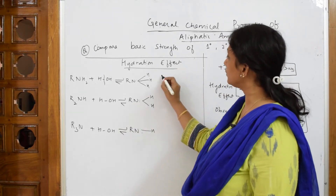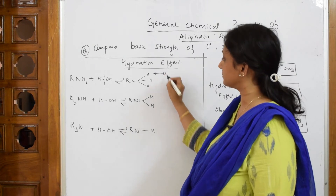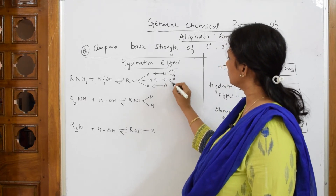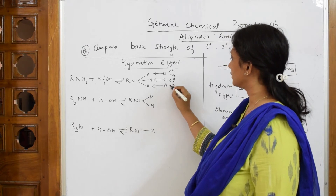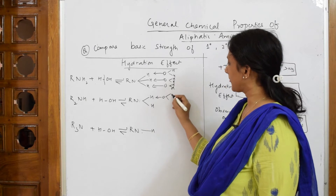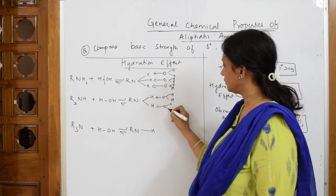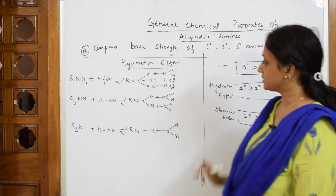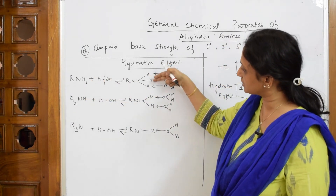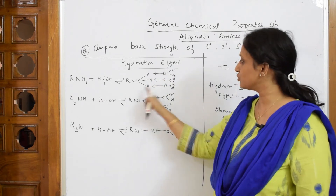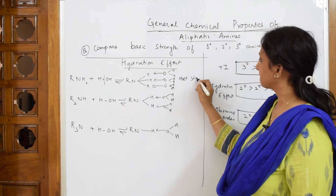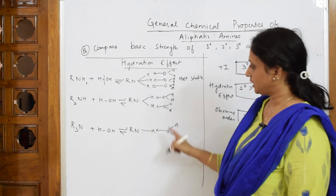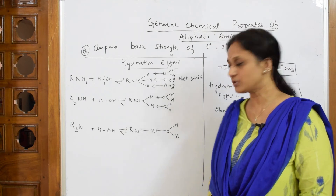These hydrogen atoms are going to form hydrogen bonding with water. See here — one oxygen, one oxygen, one oxygen — these are water molecules forming hydrogen bonds. In primary, you have three hydrogen atoms forming three hydrogen bonds with water molecules. In secondary, two hydrogen atoms form hydrogen bonds. In tertiary, there is only one hydrogen atom to form hydrogen bonding, so it gets stabilized the least.